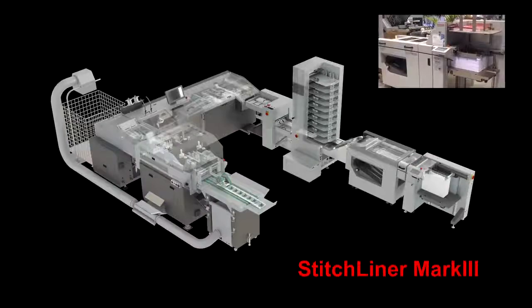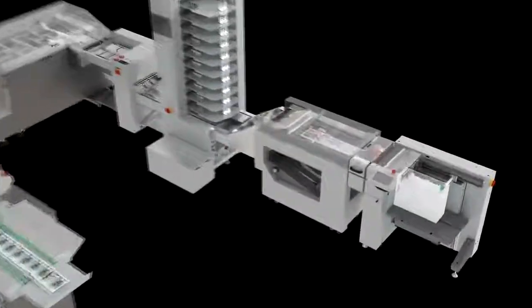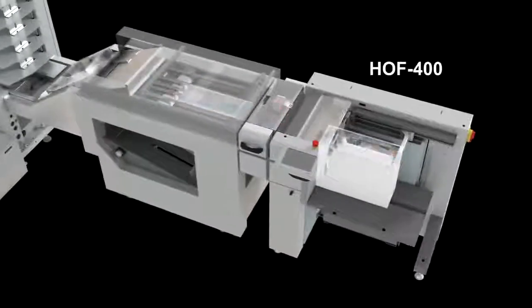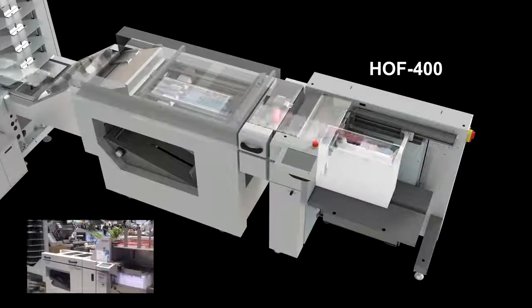Feel free to check it out up close. The HOF-400 can feed pre-folded digital sets at speeds up to 35,000 sheets per hour, making it capable of handling the output of one or more printers.